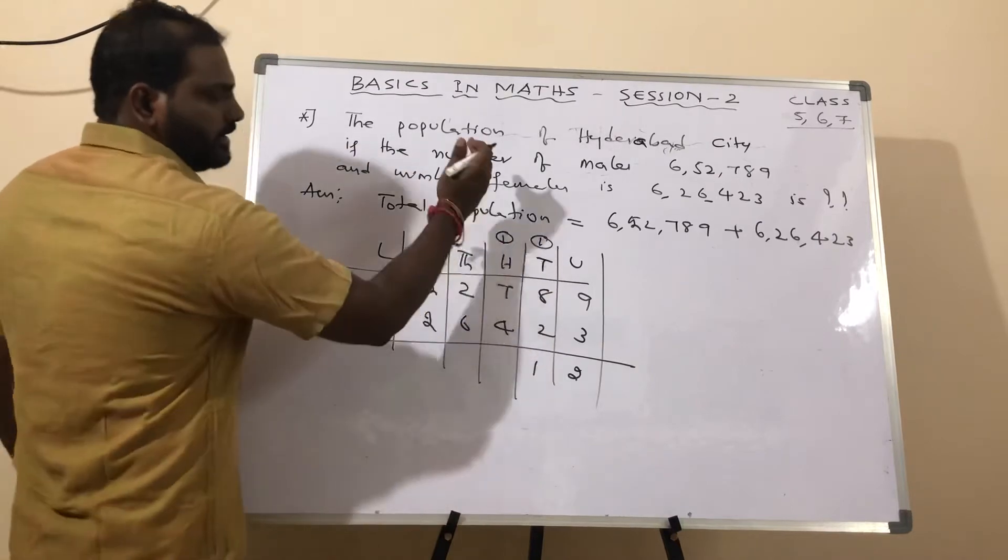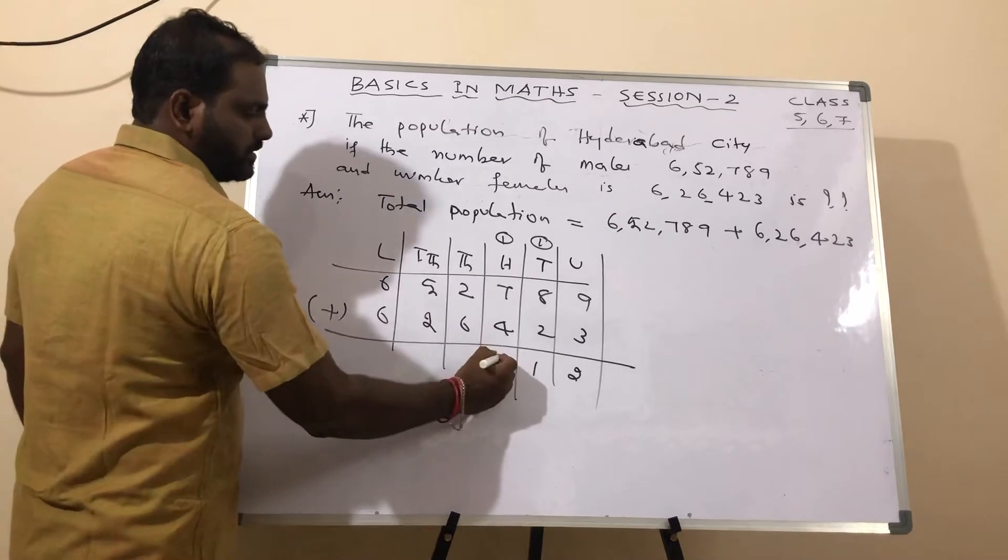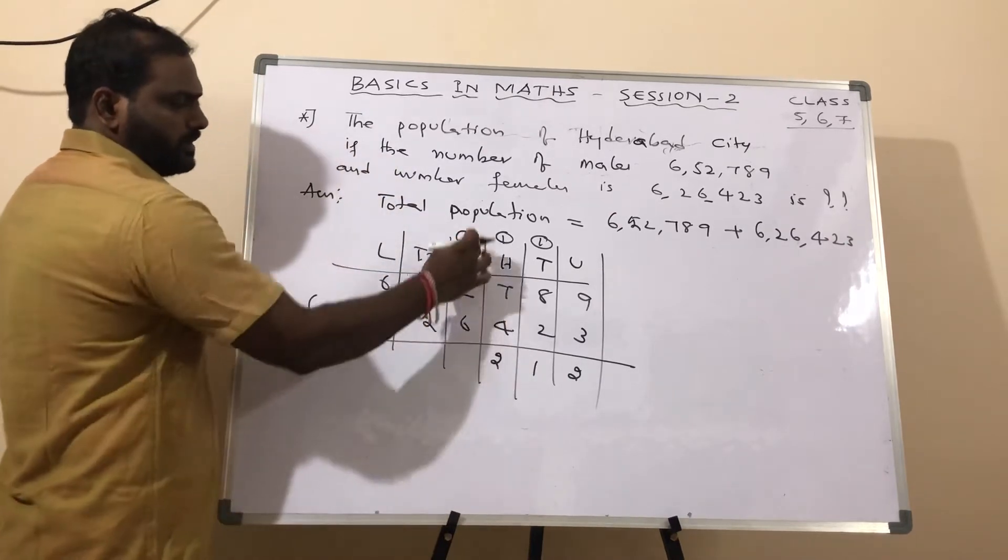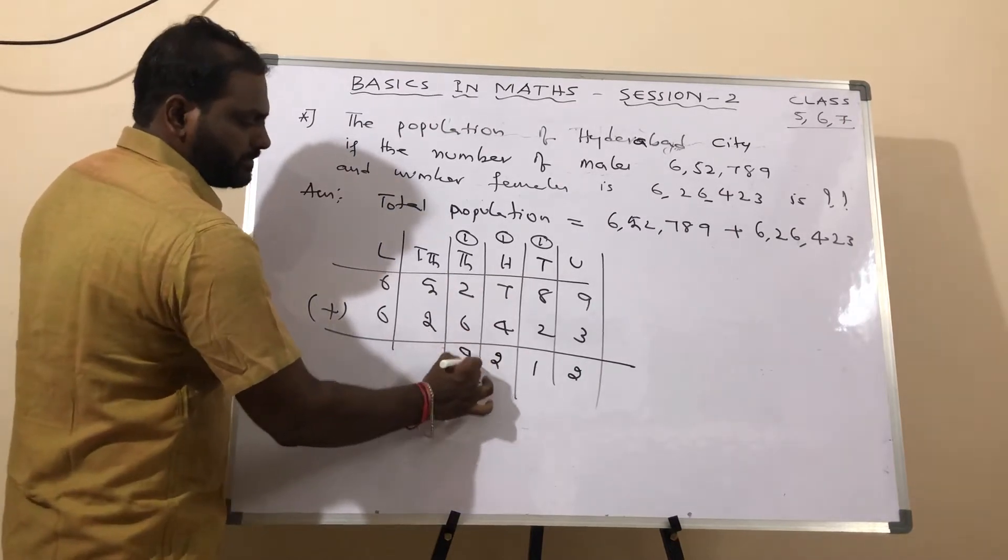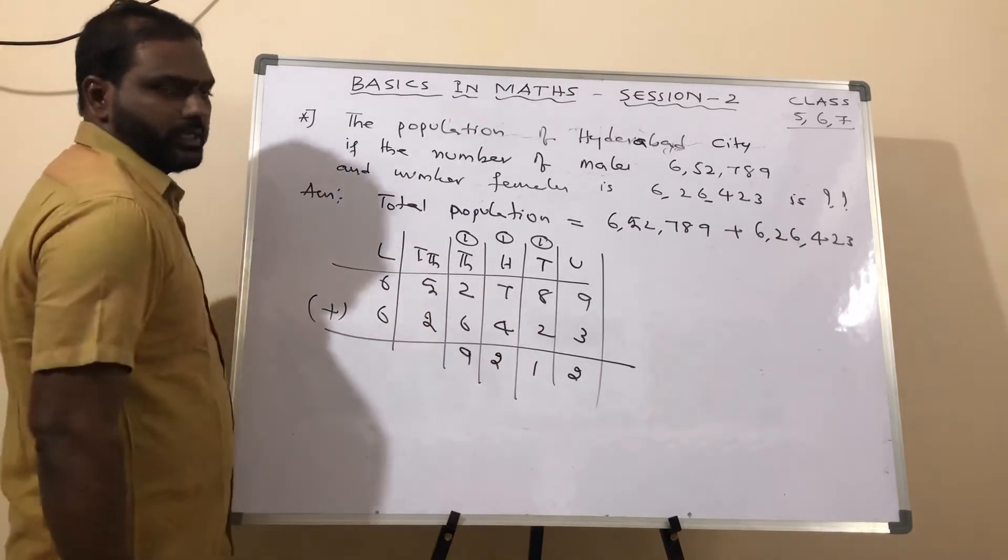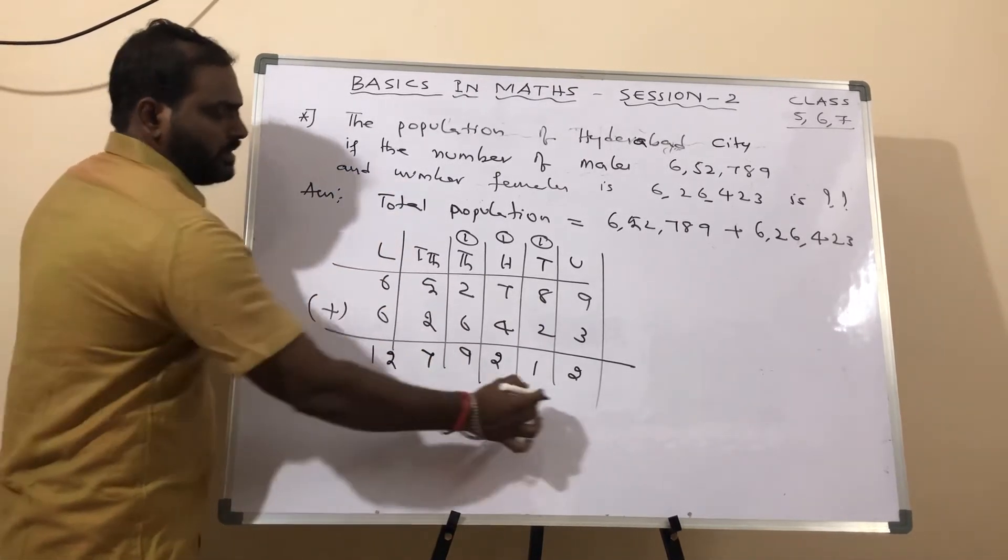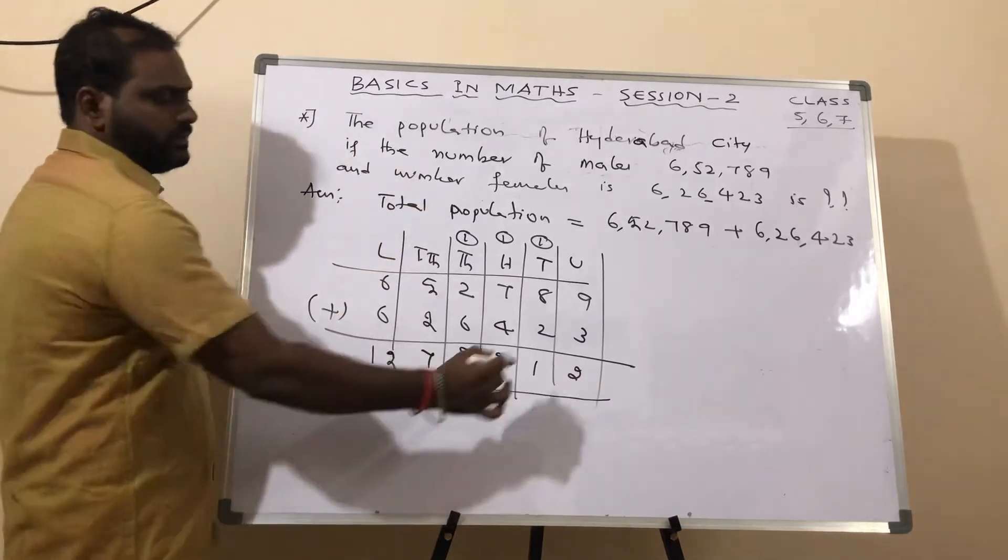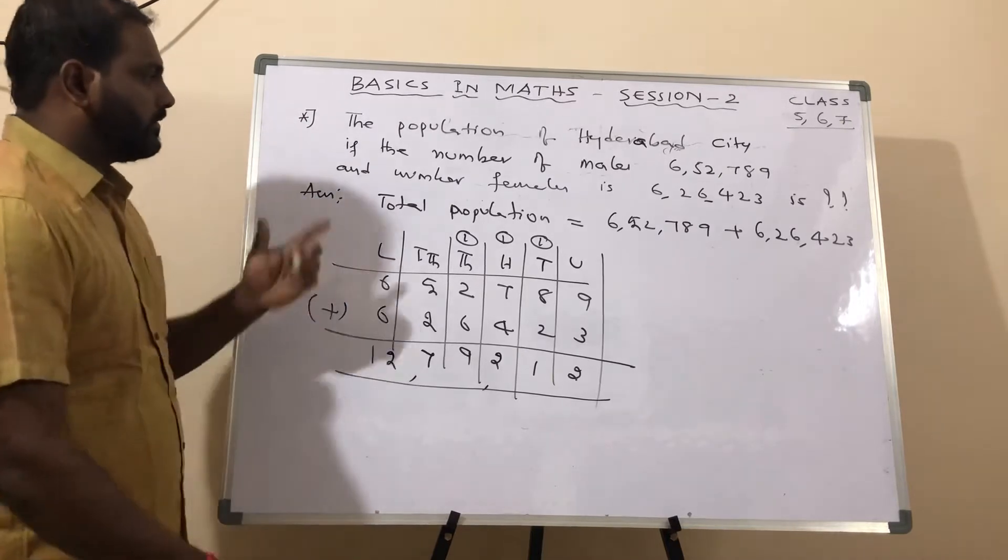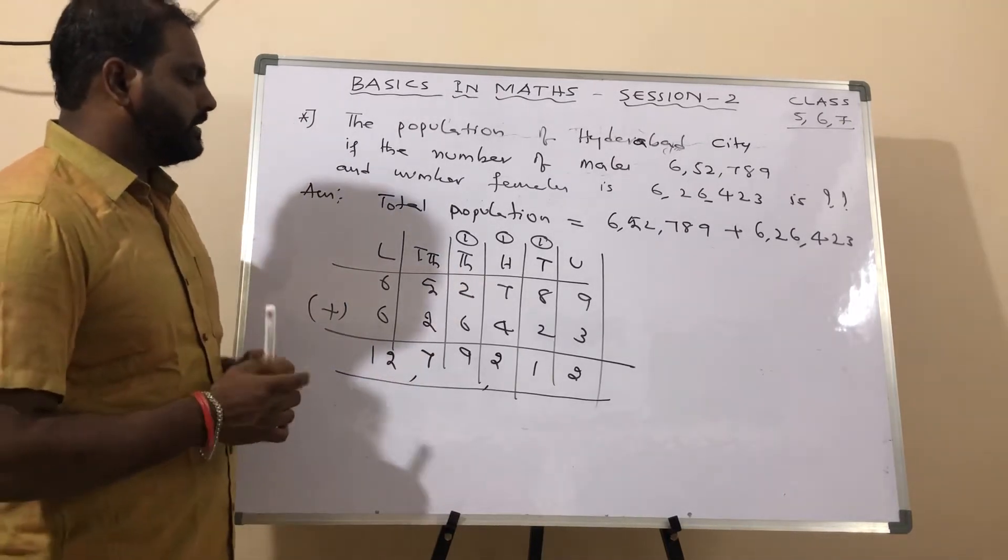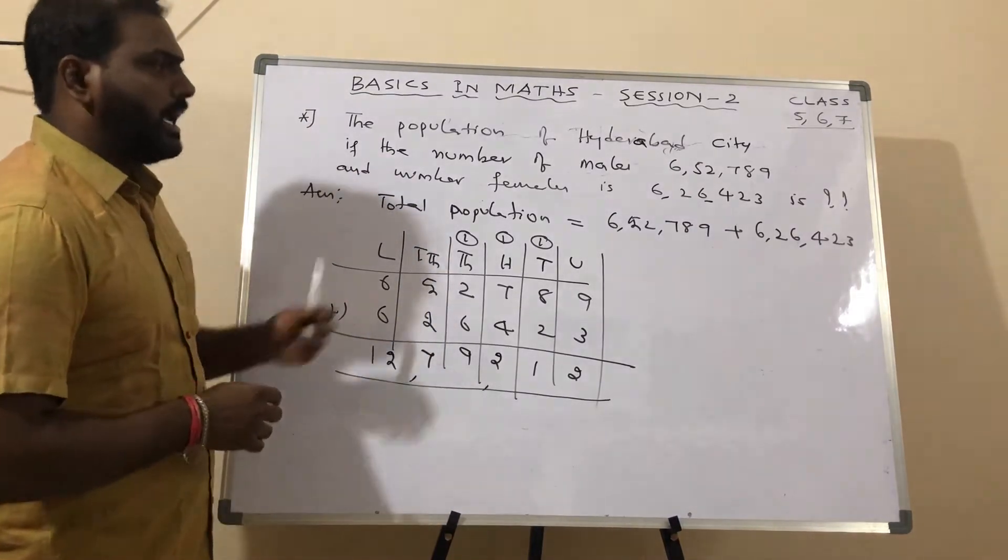8 plus 2 is 10, plus 1 is 11. So 1 here and 1 here. You can calculate from either side. 7 plus 4 is 11, plus 1 is 12. 6 plus 2 is 9, plus 1 is 9. And 5 plus 2 is 7. 6 plus 6 is 12. Therefore the answer is 12,79,212.